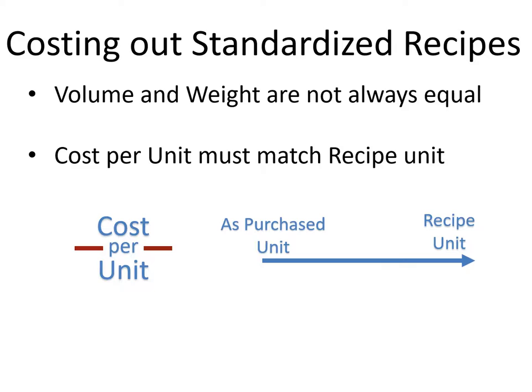The second point: the cost per unit — what we pay for it — must match the recipe unit — how we're going to use it. For example, we buy flour by the pound, but if we're making a roux we might measure flour by the ounce. If I buy flour by the pound and my roux calls for flour by the ounce, I need to convert everything from pounds to ounces so my cost per unit matches my recipe unit.